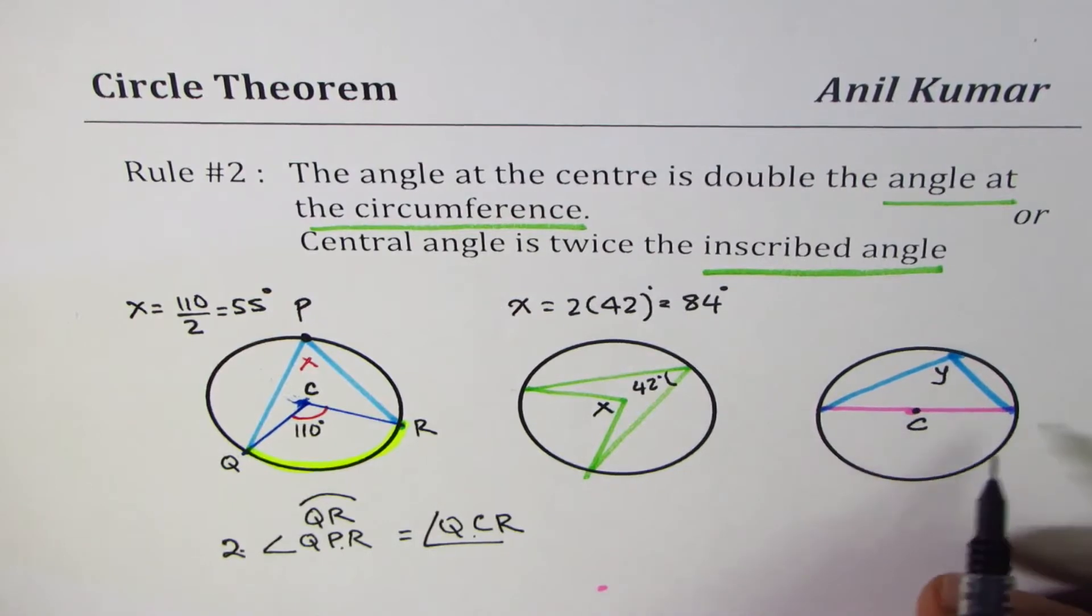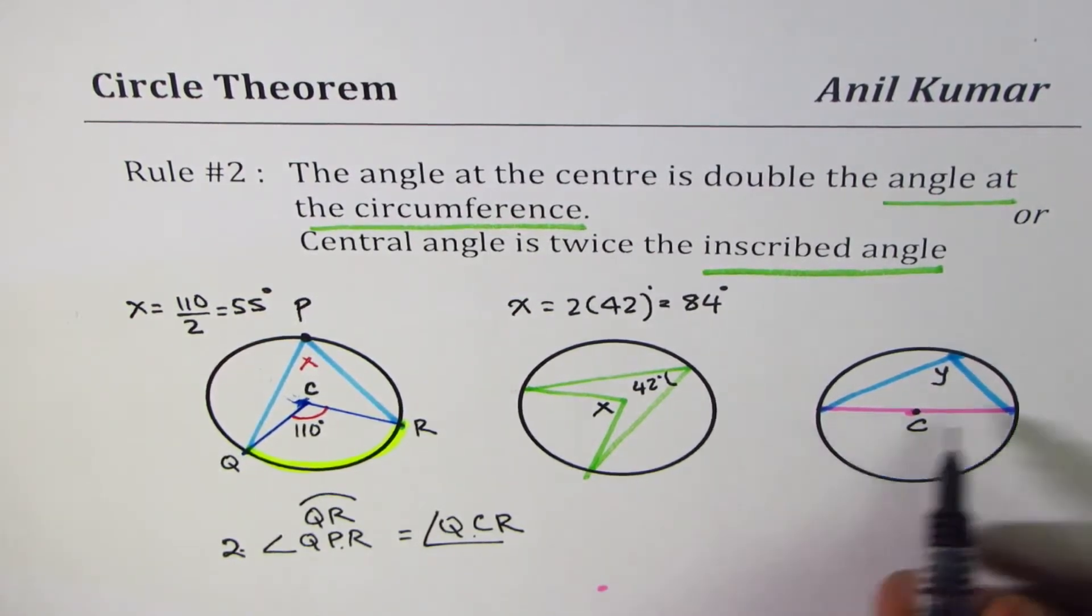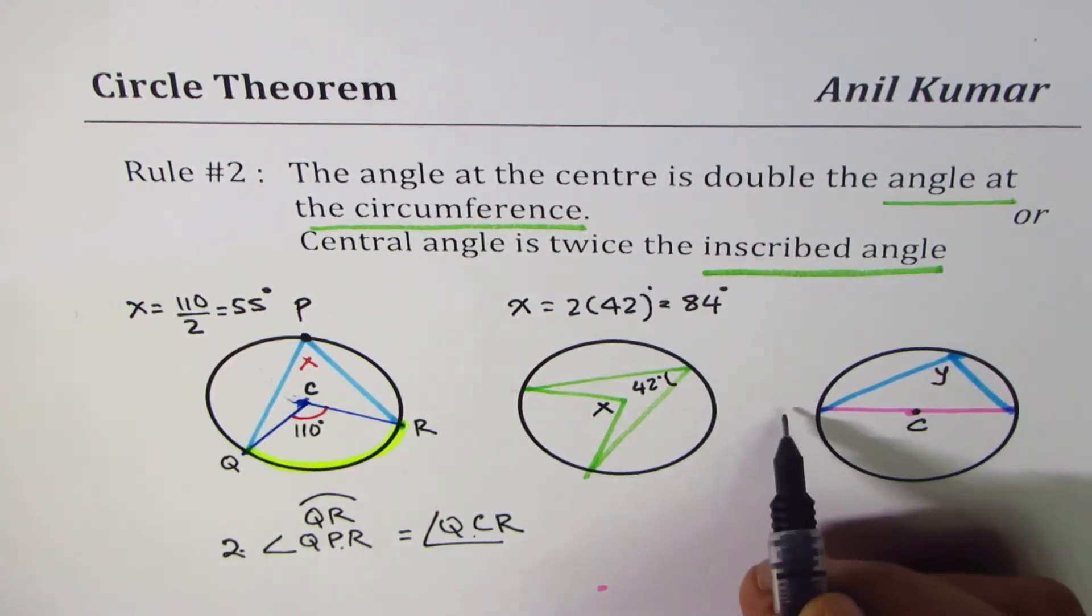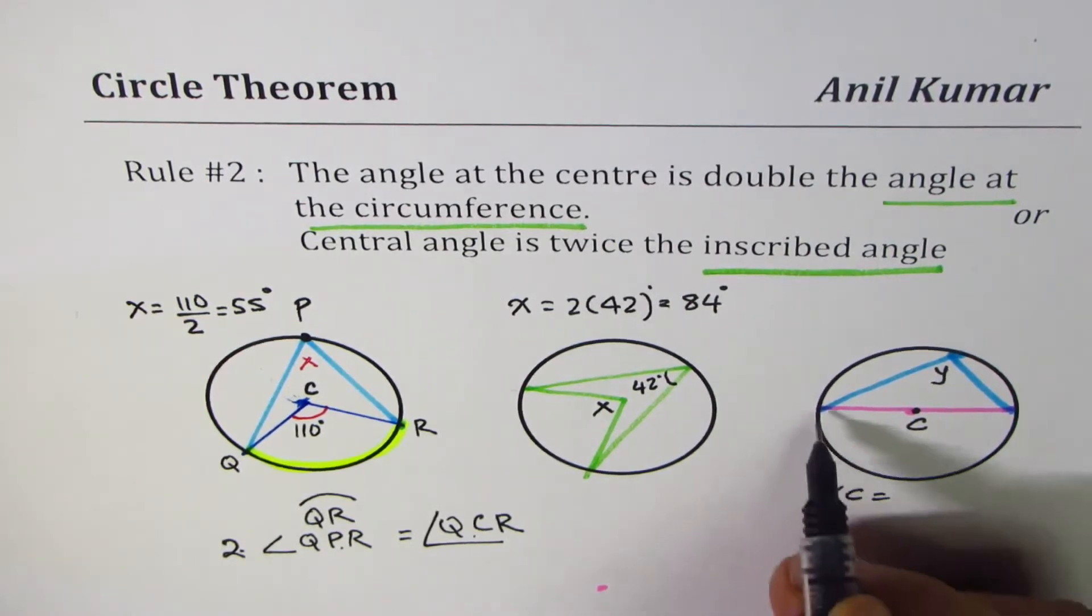We know C is the center of the circle. We need to find Y. Clearly, we can see that, let me label it better, or we can say angle C is a straight line,